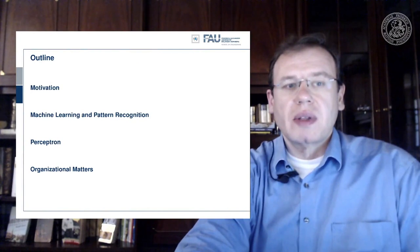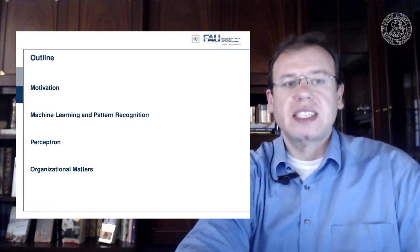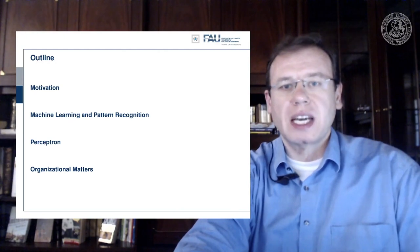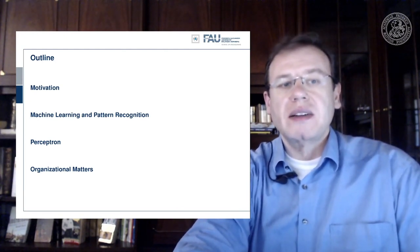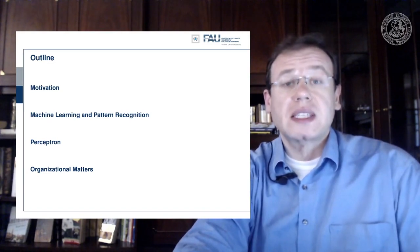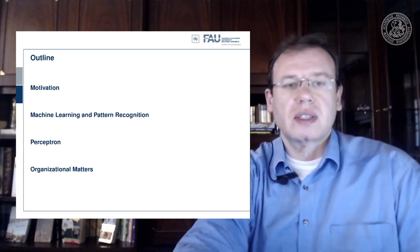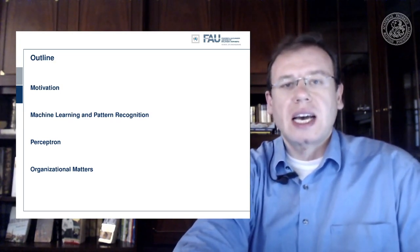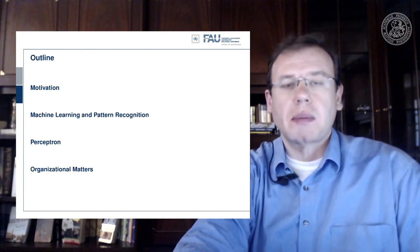We are standing on the shoulders of giants who in the past simplified the problem of problem solving so much that now we have a chance to do the final step. Now let's have a short look at the outline. We'll start with a motivation for deep learning, then talk about machine learning and pattern recognition. In the first set of lectures we also want to start from the very basics — we will talk about the perceptron — and there are also organizational matters in video number five.